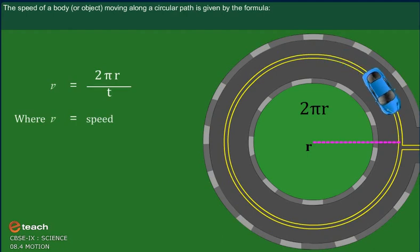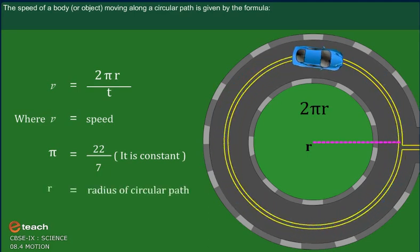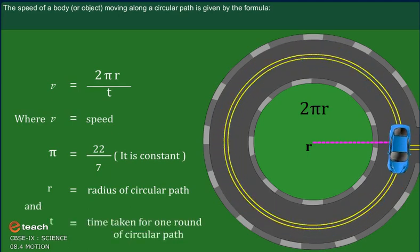Where v is equal to speed, π is equal to 22/7 (it is constant), r is equal to radius of circular path, and t is equal to time taken for one round of the circular path.